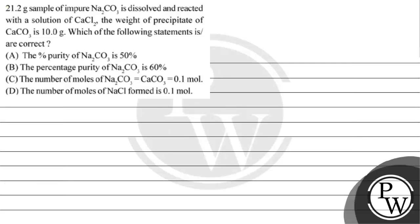Hello Bacho, let's read this question. The question says 21.2 gram of sample of pure Na2CO3 is dissolved and reacted with a solution of CaCl2. The weight of precipitate of calcium carbonate is 10 gram. Which of the following statement are correct? Option A: percentage purity of Na2CO3 is 50%. Option B: percentage purity of Na2CO3 is 60%. Option C: the number of moles of sodium carbonate and calcium carbonate equals 0.1 mole. Option D: the number of moles of NaCl sodium chloride formed is 0.1 mole.